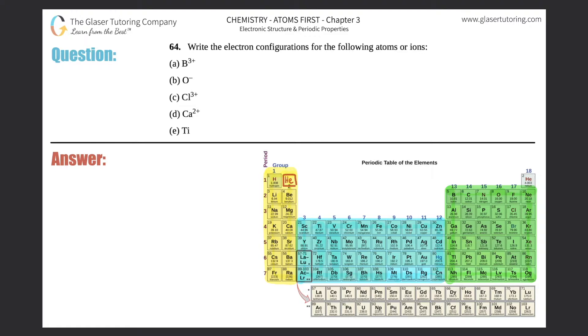Number 64: Write the electron configurations for the following atoms or ions, parts a through e. So we've done tons of questions like this already with electron configurations and ions, so this one should be pretty straightforward.